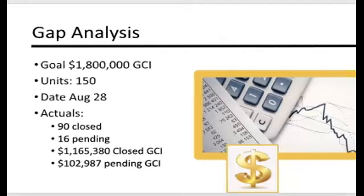Go to your actuals. In my example, the actuals are 90 closings year to date, 16 pending under contract escrows, $1,165,380 in closed gross commission income, and $102,987 in pending gross commission income. Write your actuals down.